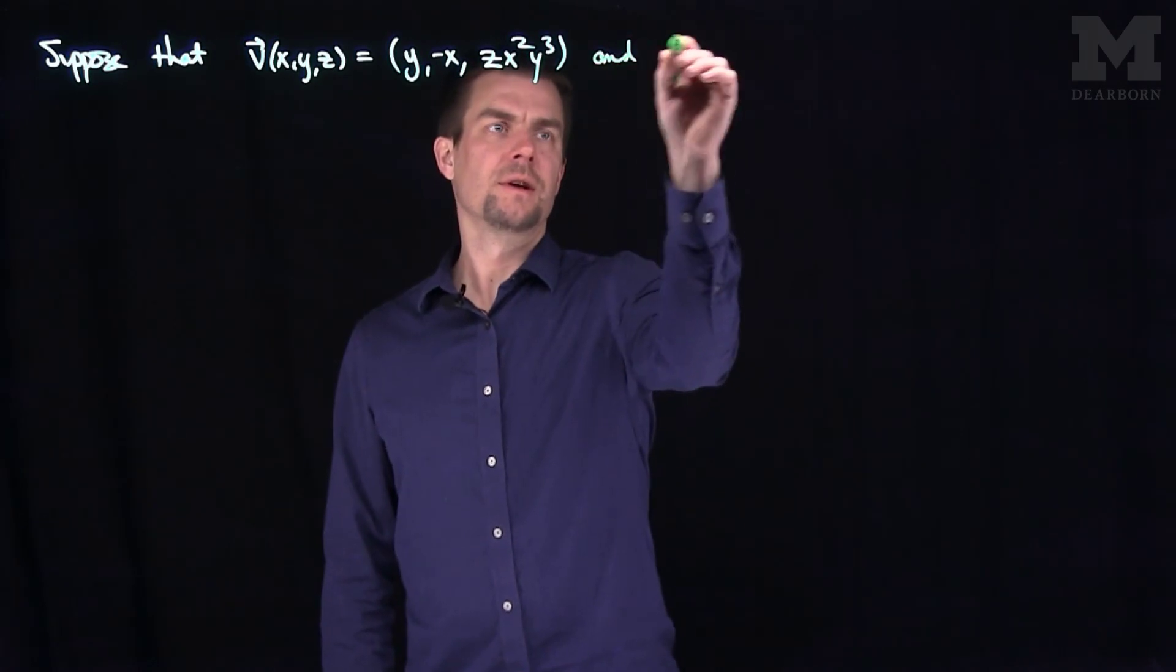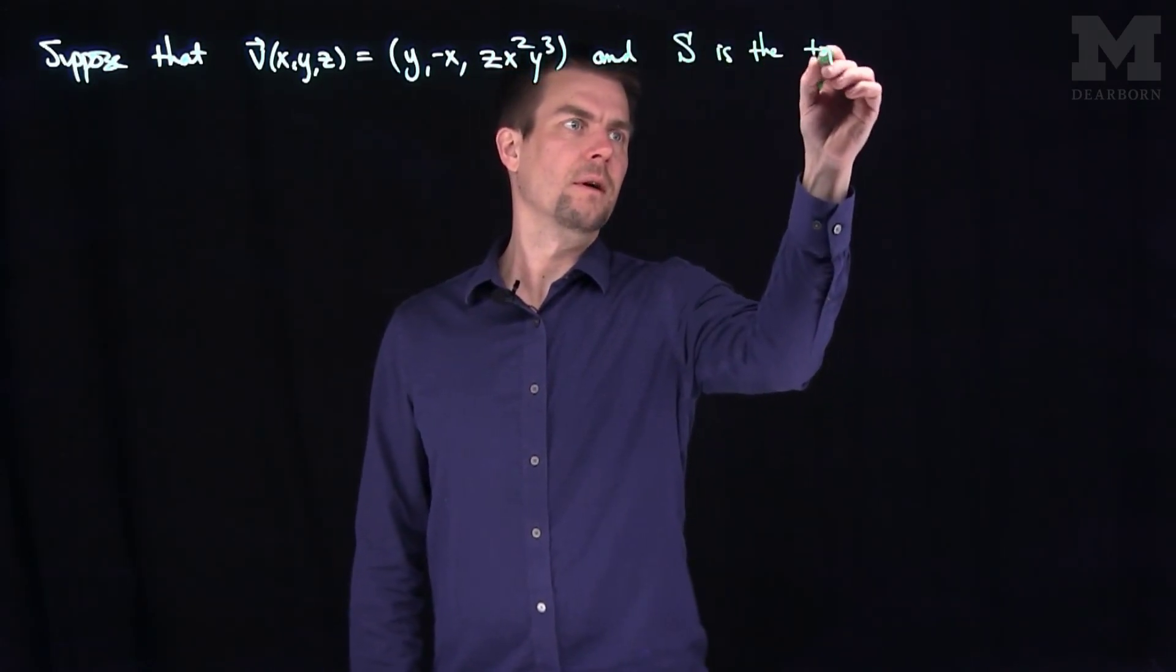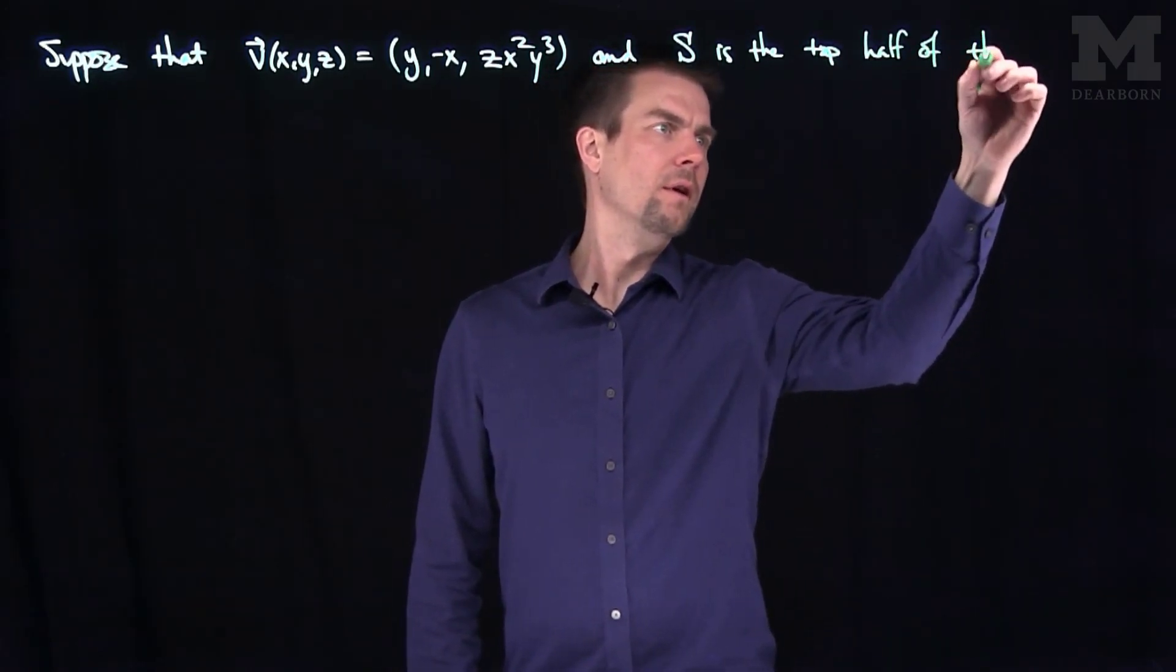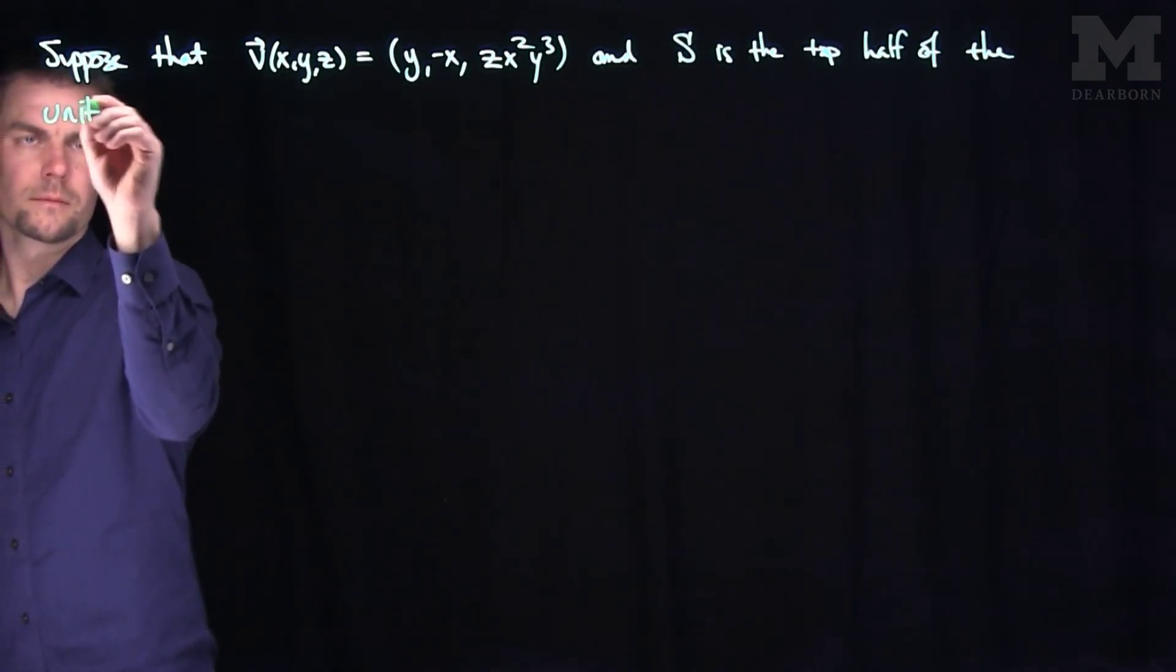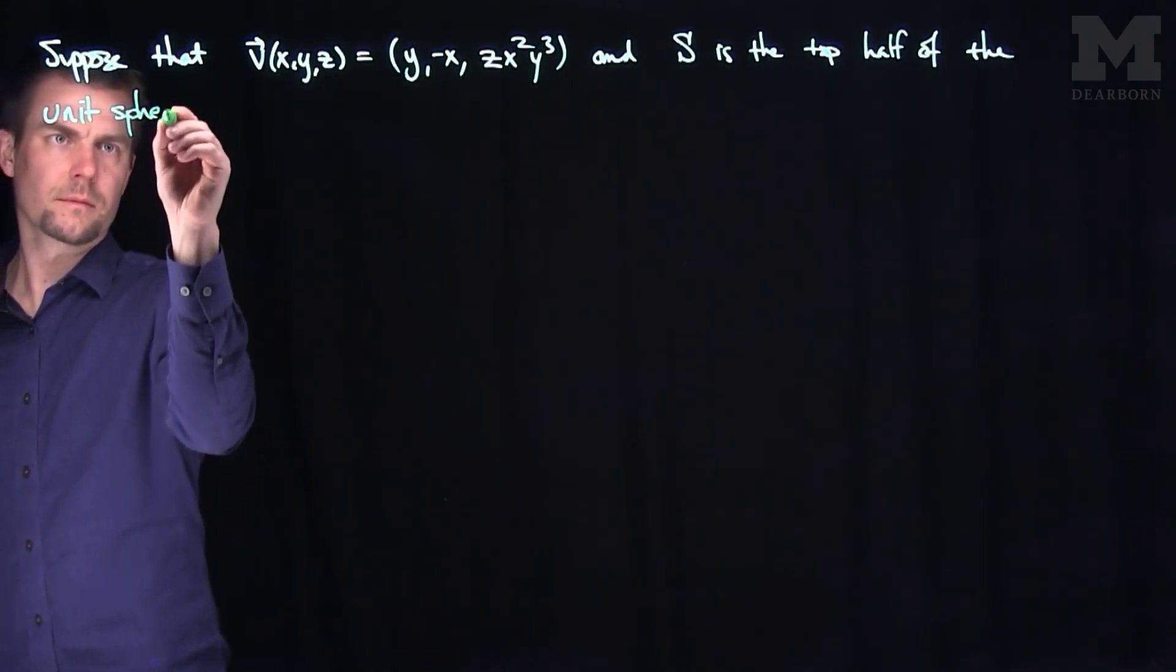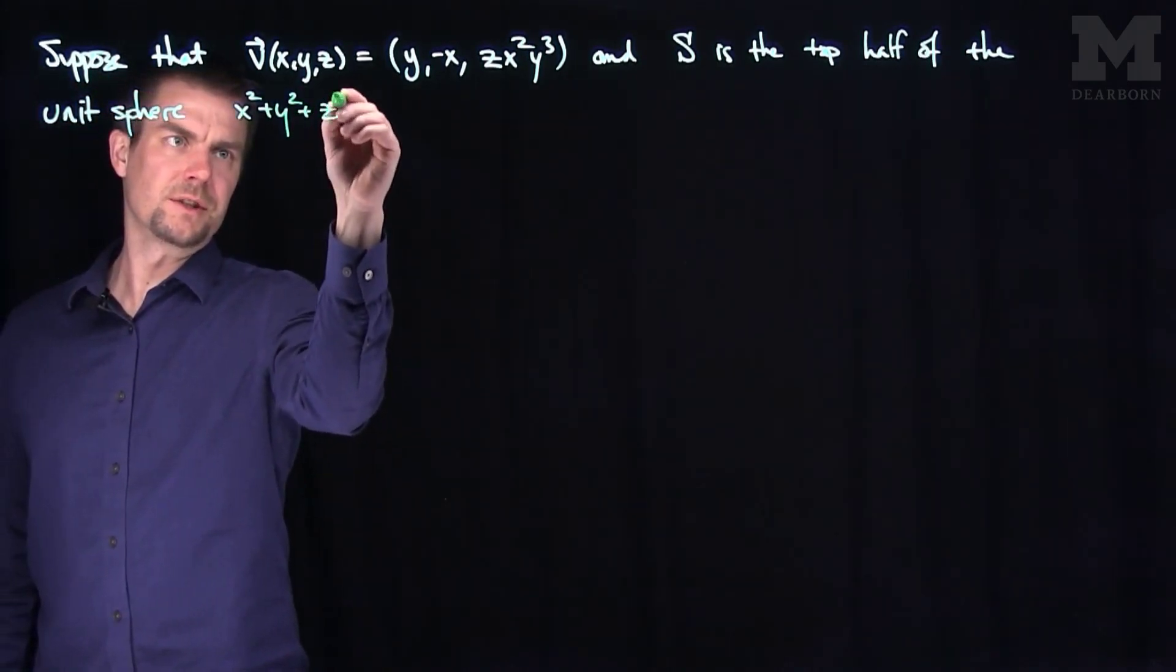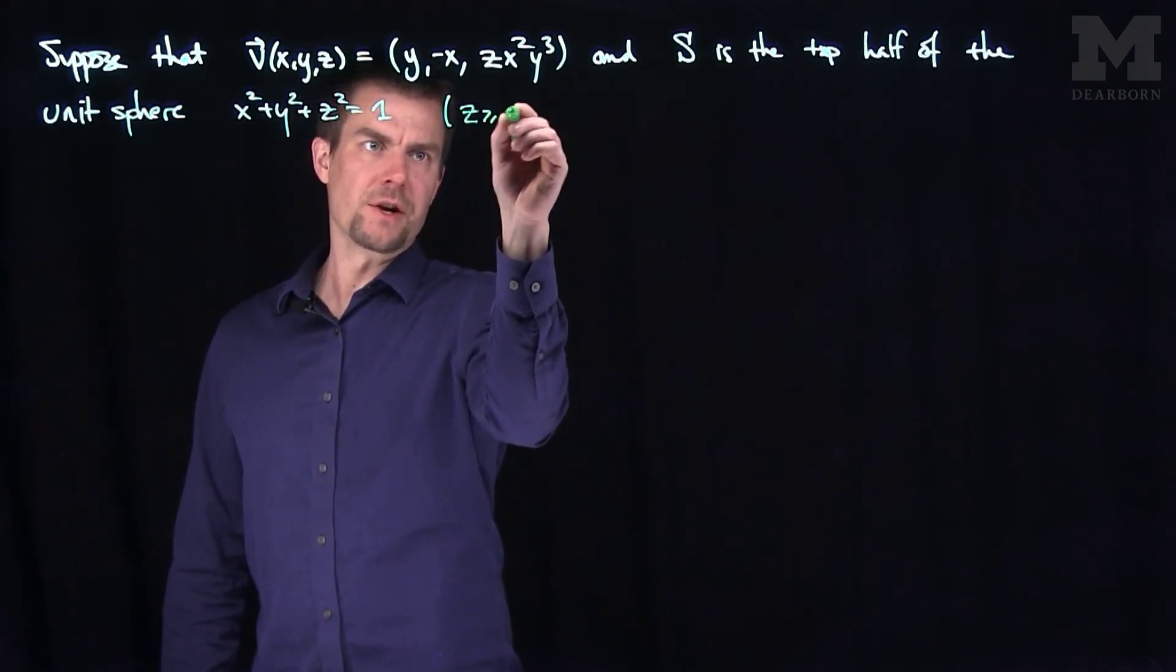And S is the top half of the unit sphere. x squared plus y squared plus z squared is equal to one. And so that, of course, just means that z is bigger than or equal to zero.